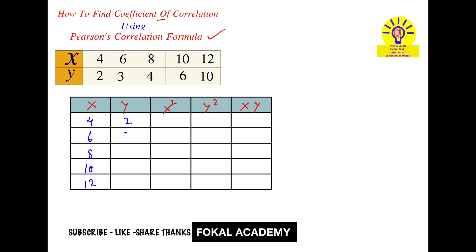The y values are 2, 3, 4, 6, 10. Next, find x square values: 4 squared is 16, 6 squared is 36, 8 squared is 64, 10 squared is 100, 12 squared is 144. Next, y square values: 2 squared is 4, 3 squared is 9, 4 squared is 16, 6 squared is 36, 10 squared is 100. Now the xy products in the last column: 4×2=8, 6×3=18, 8×4=32, 10×6=60, 12×10=120.